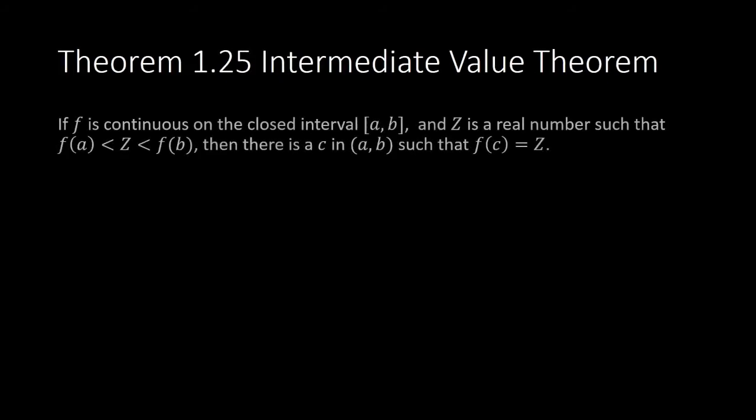I will flash again the Intermediate Value Theorem. If f is continuous on the closed interval [a, b], and Z is a real number such that it is between f(a) and f(b), then there is a c in the open interval (a, b) such that f(c) equals capital Z.